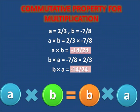Let us now look at multiplication. Consider rational number a equals to 2 by 3 and b equals to minus 7 by 8. Calculating a multiplied by b: 2 by 3 multiplied by minus 7 by 8 equals minus 14 by 24. Now calculating b multiplied by a: minus 7 by 8 multiplied by 2 by 3 equals minus 14 by 24. So we get the same values — a multiplied by b is equals to b multiplied by a. So multiplication is again commutative for rational numbers.